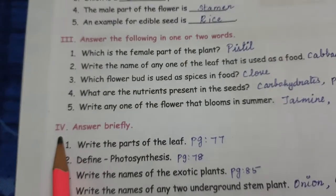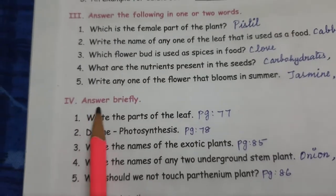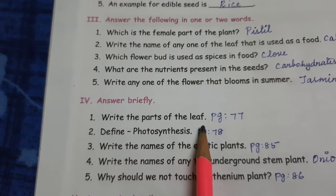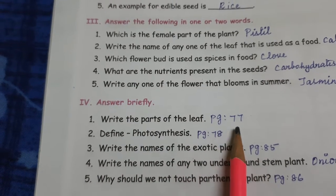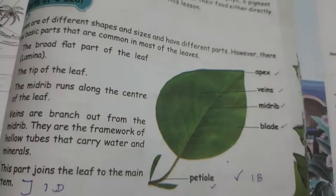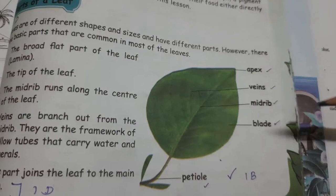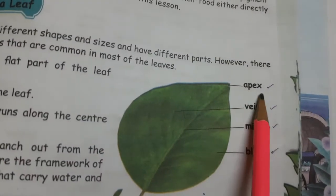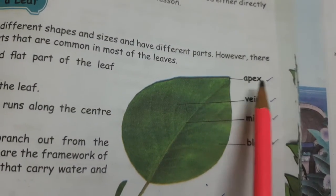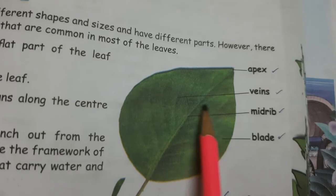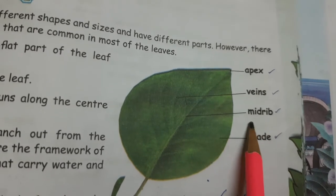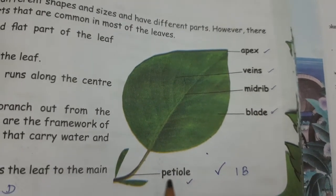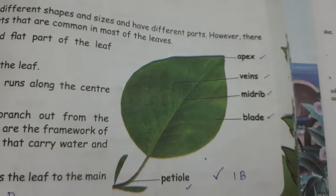Next, answer briefly. First question: write the parts of the leaf. This answer is on page number 77. The parts of the leaf are: apex, veins, midrib, blade, and petiole.